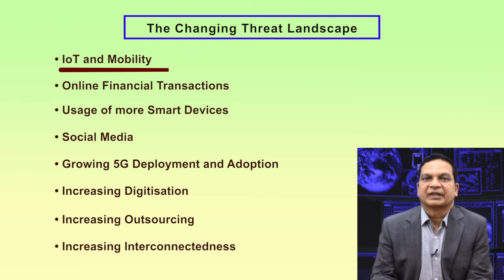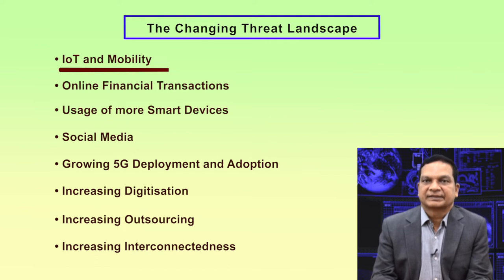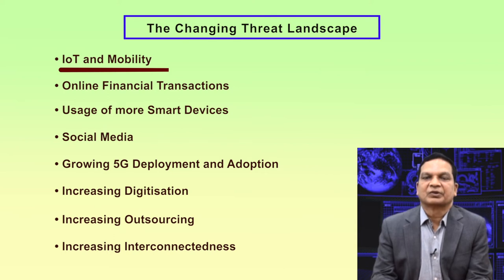In an IoT application like a smart home, whatever appliances are used are able to communicate with each other and share information over a network, passing data to any smart device such as a mobile phone. Because of this type of application, the attack and threat landscape is again increasing. Each device needs a separate security policy; otherwise it is very difficult to have a uniform security policy enforced to securely control all devices connected using IoT technologies.